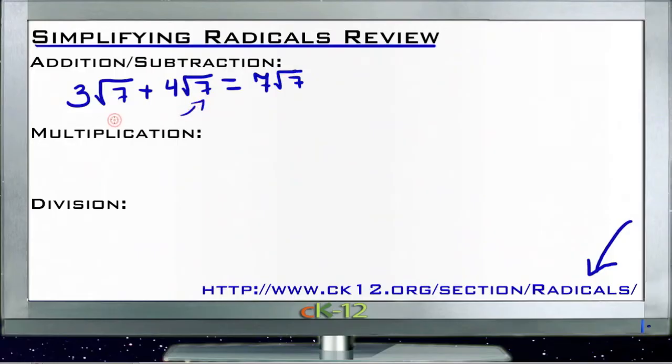If you have four roots of six added to four roots of three, you can't do anything with them. There's no change because these two different numbers aren't the same—the number under the root is different here and here.